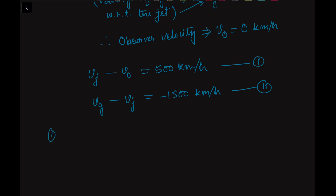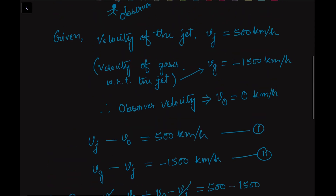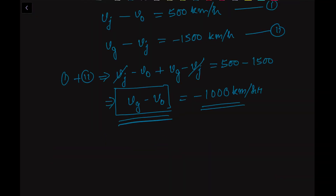So what we will do is add these two equations — one plus two. If we add them, we get: Vj minus V_o plus Vg minus Vj equals 500 minus 1500. The Vj terms cancel out, therefore we have Vg minus V_o equals minus 1000 km per hour. This means the velocity of the ejected gases with respect to the observer is minus 1000 km per hour. The negative sign means it is in the opposite direction to the airplane's movement — it is coming towards the observer.